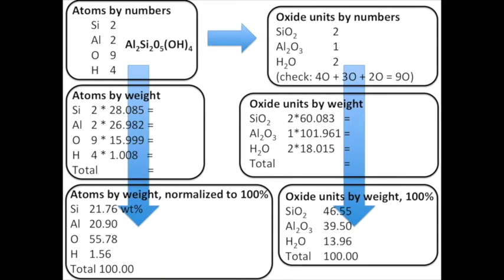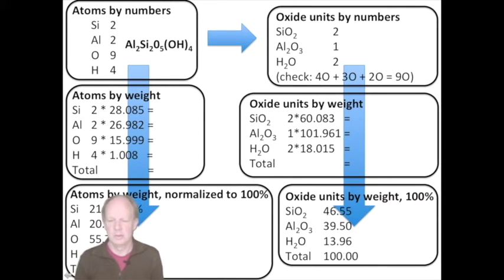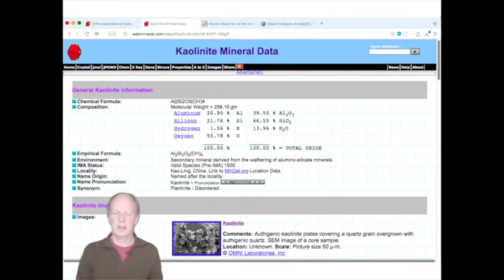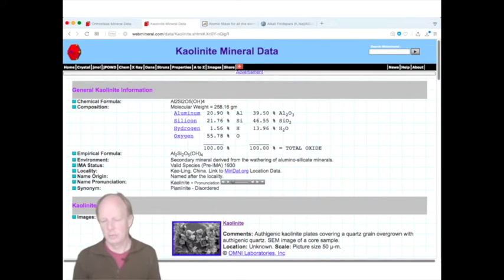If you've done this correctly, the numbers you should get are: atoms by weight — silicon 21.76%, aluminium 20.90%, oxygen 55.78%, hydrogen 1.56%. For oxide units by weight normalized to 100%, you should get SiO₂ 46.55%, Al₂O₃ 39.50%, and H₂O 13.96%, adding up to 100. You can verify this on the WebMineral website by looking up kaolinite — all three representations are there and correspond to what's on the slide.